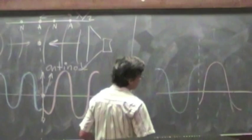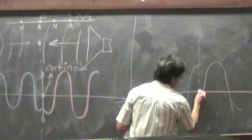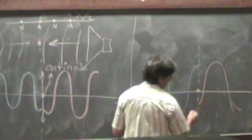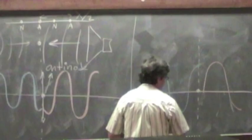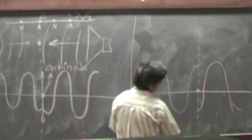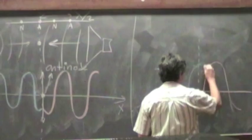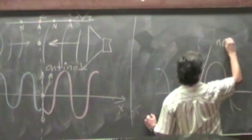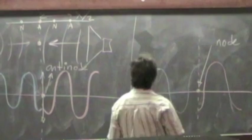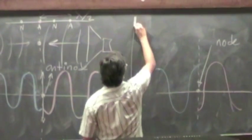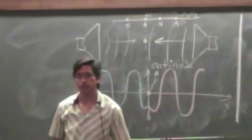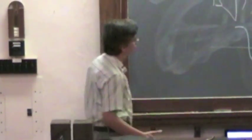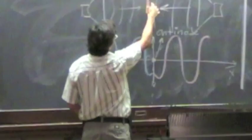And if that is the case — if that's how you set up these speakers — then the midpoint between the two speakers is going to be a node. So in that case you will get a node there. And of course you can have any situation in between. If you don't start the speakers exactly at the same time doing the same thing, then you'll have something in between node and anti-node.